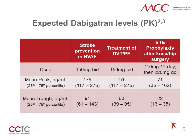This table provides the expected mean peak and trough drug concentrations depending on the dose of Dabigatran administered. Note that the 25th to 75th percentile ranges are quite broad, with overlap between the peak and trough ranges.